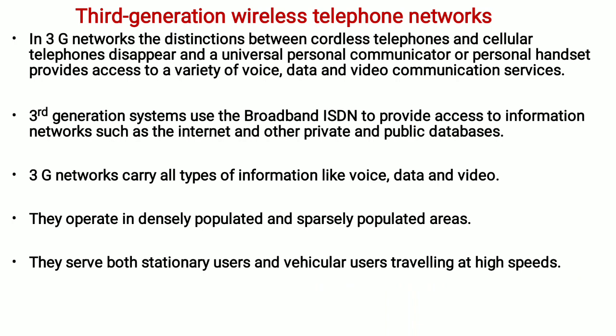Coming to the 3rd generation wireless telephone network, it removes the distinction between cordless telephones and cellular telephones. A universal device — our existing mobile telephone, personal communicator, or personal handset — can provide access to a radio service such as voice, data, or video communication service.